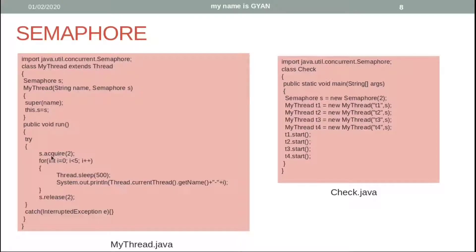Another thread which is going to execute this acquire method also needs at least two values of the initial counter to enter the critical section. But since the first thread has consumed all the values of the initial counter, the second thread will not be able to enter the critical section. Therefore, only one thread will be allowed to go into the critical section and execute the for loop.